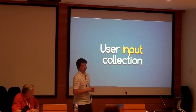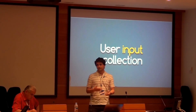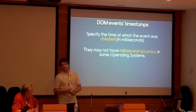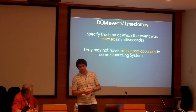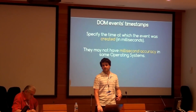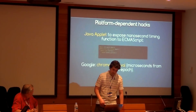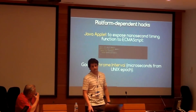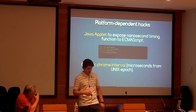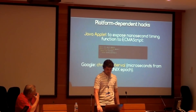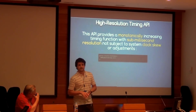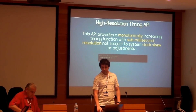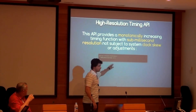The second issue is user input collection — how can we accurately gather user input and interactivity? Theoretically, DOM event timestamps are millisecond-accurate, but this is not necessarily true on every operating system or user agent. Some developers implement platform-dependent hacks like Java applets to access millisecond timing from JavaScript, or vendor-specific solutions like Chrome intervals. The good news is that a new W3C API provides a monotonically increasing timing function with sub-millisecond resolution, and it's very easy to use — just one method.